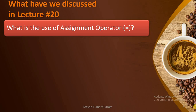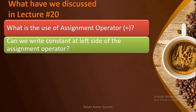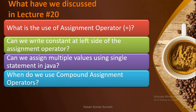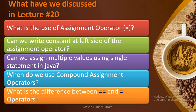What is the use of assignment operator? Can we write a constant at the left-hand side of the assignment operator? Can we assign multiple values using a single statement in Java? When do we use compound assignment operators? What is the difference between the equality operator and the assignment operator? We covered all these in lecture 20 in detail. The link is given in the description box.